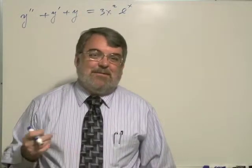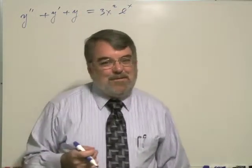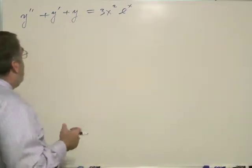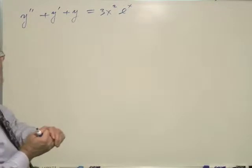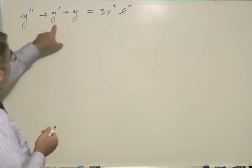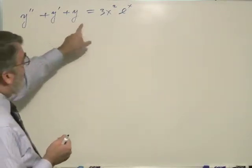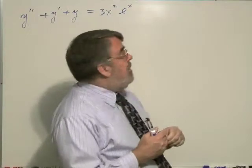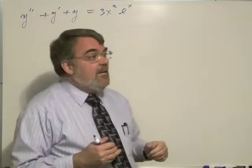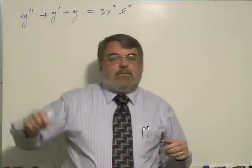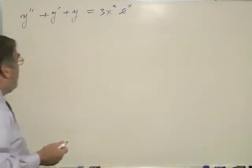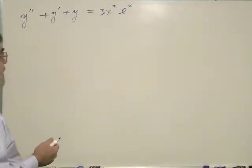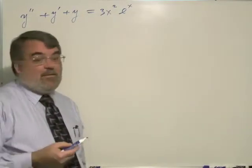This problem is going to be tougher than the last one. This is problem number 20 on page 282 in the book. The equation is: y double prime plus y prime plus y equals 3x squared e to the x. Let's give this a shot.